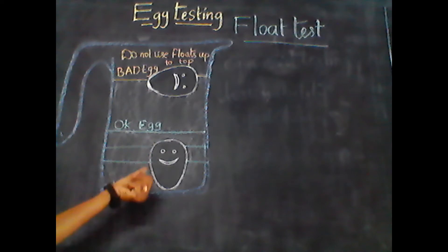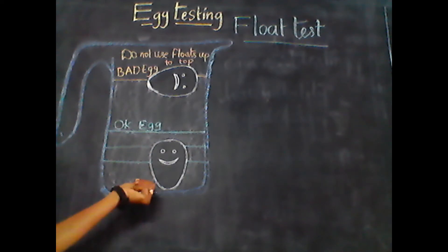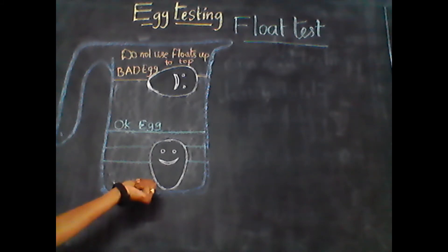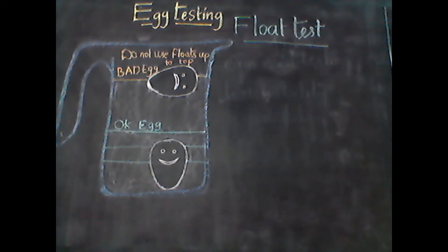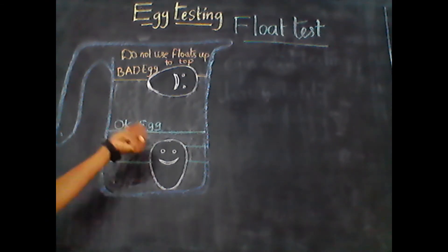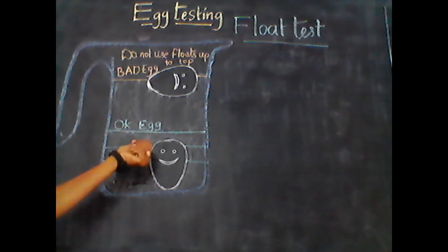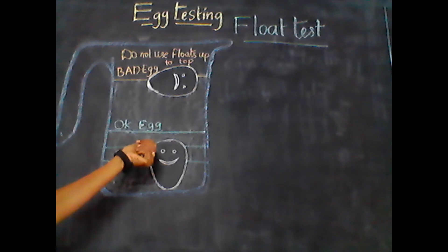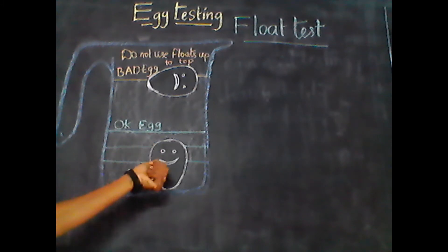Leave for 10 to 15 minutes and observe the fertile eggs for selection. After 10 to 15 minutes, we have to see whether the egg is fertile or not. Totally sunken eggs are the sinkers or duds and are unfit for hatching.